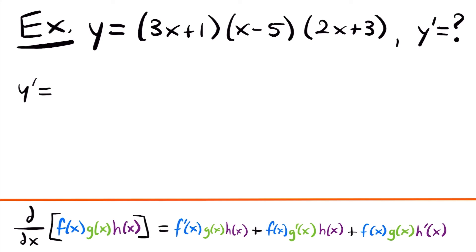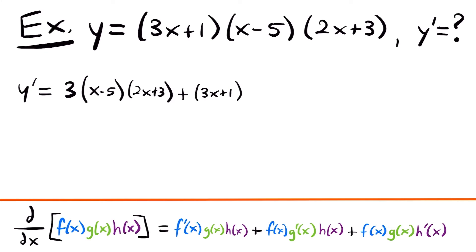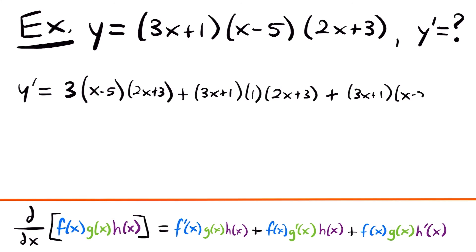Taking the derivative of the first function: the derivative of 3x plus 1 is 3, multiplied by the other two functions x minus 5 and 2x plus 3, plus the original first function 3x plus 1 times the derivative of the second function — the derivative of x minus 5 is 1 — times the original third function 2x plus 3, plus 3x plus 1 times x minus 5 times the derivative of 2x plus 3, which is 2.